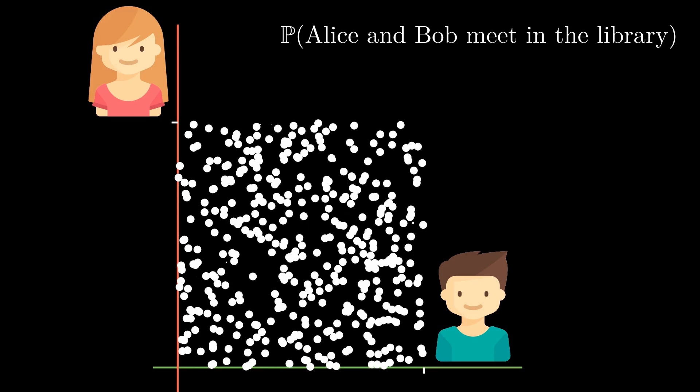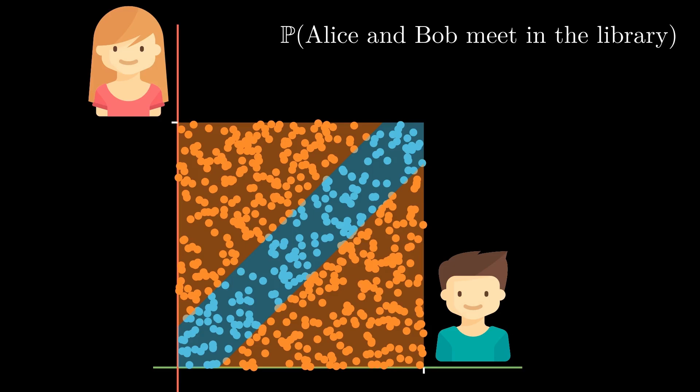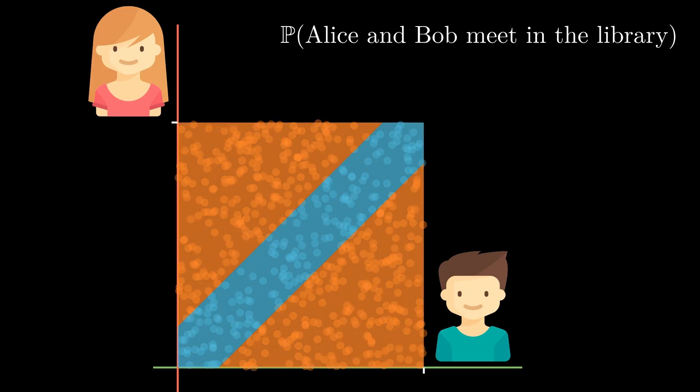It should be easy now to find the region which marks them meeting in the library. Because their arrival times are uniformly distributed, the probability that they meet is the ratio of the area of this region to that of the square.